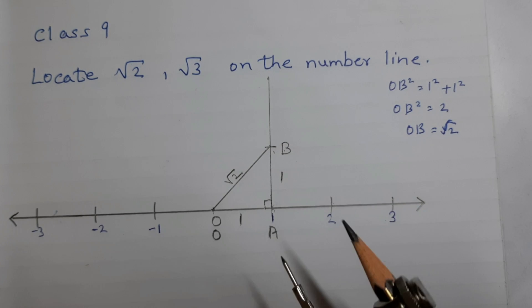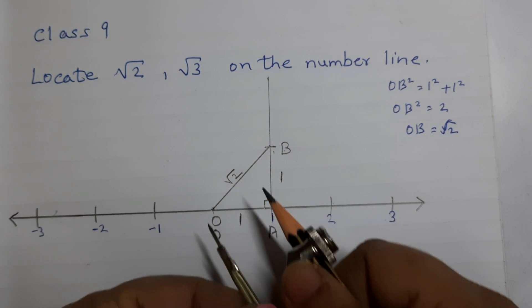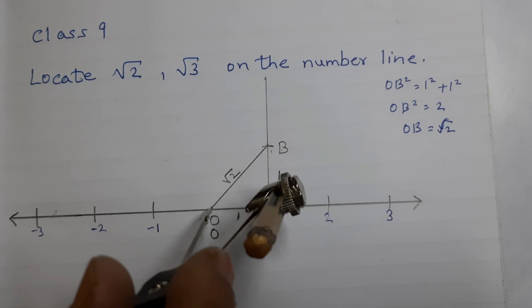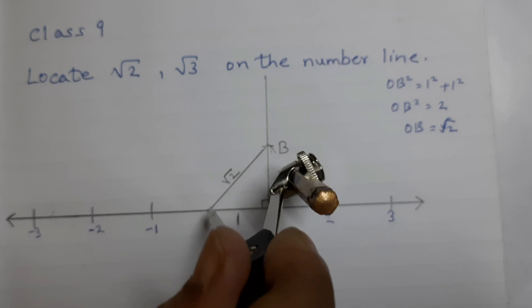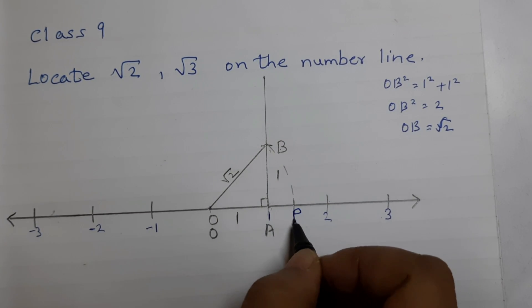Take the compass. Measure this length, OB. Draw an arc intersecting the number line at point P. This point here is P, which represents square root of 2.